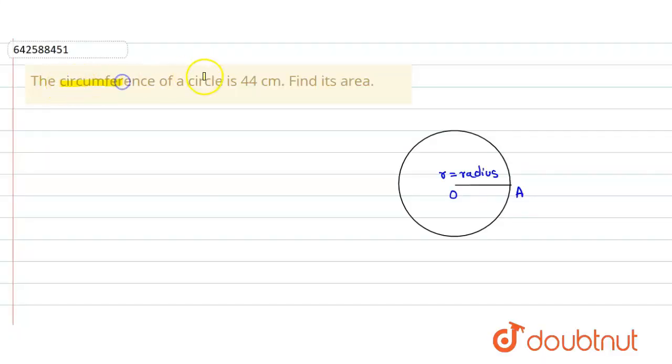In the given question, the circumference of a circle is 44 cm, then we have to find its area.